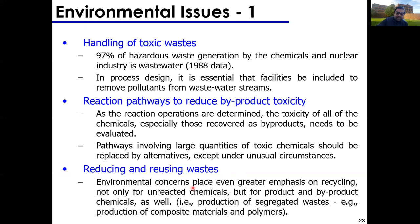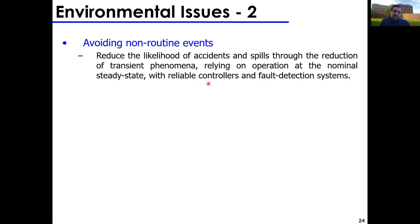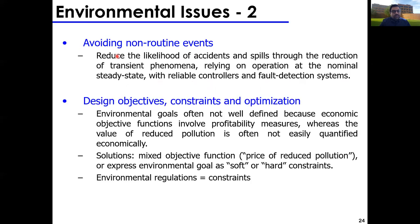Another environmental issue is avoiding non-routine events — reducing the likelihood of accidents and spills by controlling transient phenomena. You want stable reactors running at steady state, not systems always in transient states that are hard to control. This requires nominal steady-state operation, reliable controls, and fault detection systems. If you're mathematically inclined and interested in process engineering, fault detection and process controls is a very interesting field focused on avoiding accidents and keeping things running smoothly.